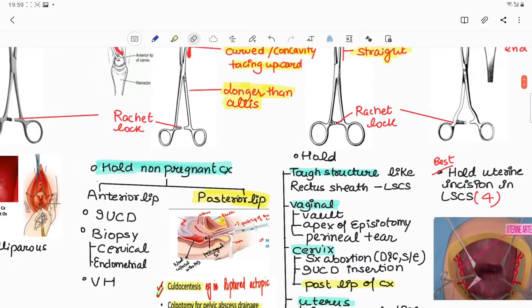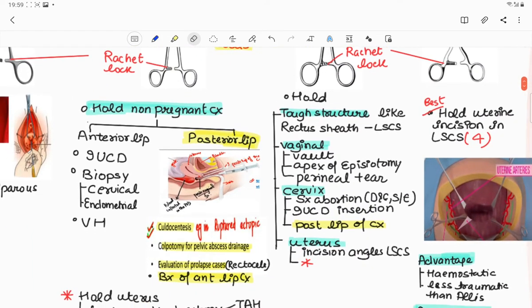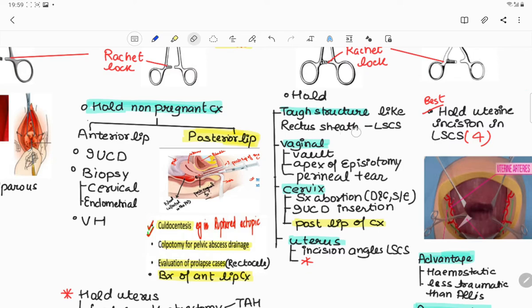Uses of Allis tissue forceps are it is used to hold tough structures like rectus sheath during lower segment cesarean sections and to hold the vaginal vault during hysterectomies or apex of episiotomy or perineal tear repair. It is used to hold the anterior lip of cervix during surgical abortion like D&C and suction and evacuation and intrauterine device insertions.